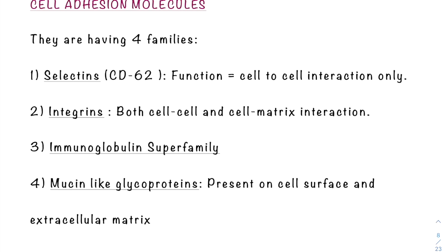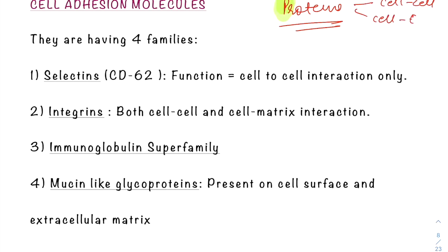Cell adhesion molecules are proteins involved in the binding of one cell with another cell or to the extracellular matrix — that is, cell-to-cell or cell-to-extracellular matrix interaction. The cell adhesion molecules can be divided into five categories: selectins, integrins, the immunoglobulin superfamily, mucin-like glycoproteins (the CD44 family), and cadherins.